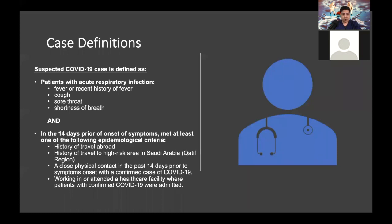The case definition for COVID-19 must include a patient with acute respiratory infection — fever or recent history of fever, cough, sore throat, shortness of breath — and a recent travel abroad or within Saudi Arabia to a high-risk area such as the Qatif region, or close contact within the past 14 days prior to symptom onset with a confirmed COVID-19 patient, or working in or attending a healthcare facility where a COVID-19 case was admitted.